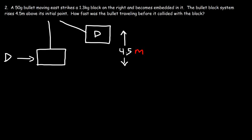Now we have the same problem in reverse. A 50 gram bullet moving east strikes a 1.3 kilogram block and becomes embedded in it. The bullet-block system rises 4.5 meters above its initial point. How fast was the bullet traveling before it collided with the block? Since we're given the height, we need to calculate the final speed of the bullet-block system after the collision, and then use that to find the initial speed of the bullet.